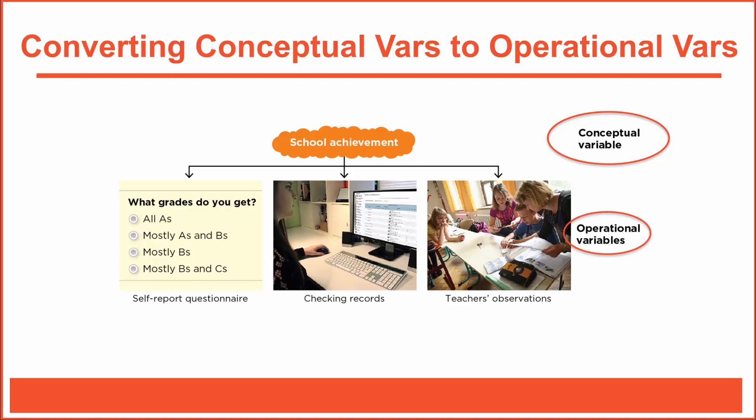In this case, we might further define student achievement in terms of grades. For example, we might create a brief questionnaire asking students: what grades do you typically earn at school? All A's, mostly A's and B's, mostly B's, etc. That's one way to measure student achievement. We'd say we're operationally defining student achievement in terms of self-reported grades in school.